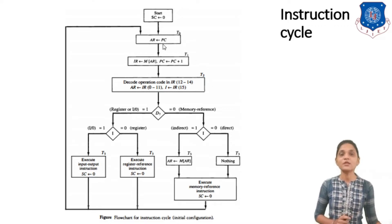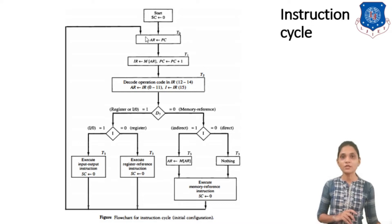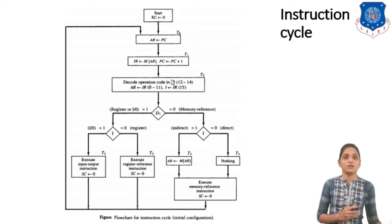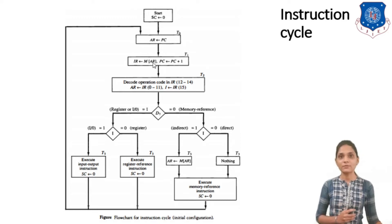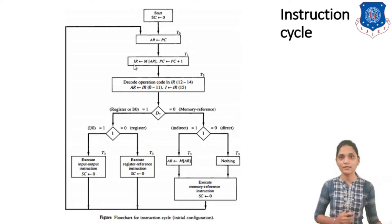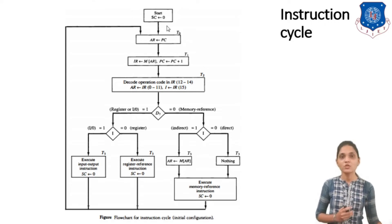At T0 timing you will access the content of the Program Counter into the Address Register so that you can access the location where your instruction is. Then you will store the content of the memory location given by the AR register to the IR register — that is your instruction — and increment the Program Counter by 1, so that your fetching of the instruction is done.